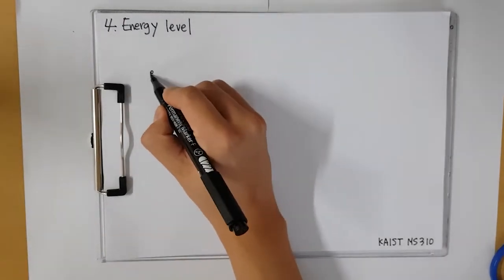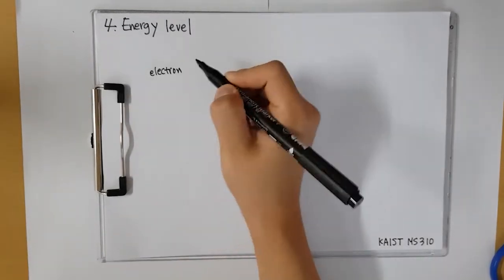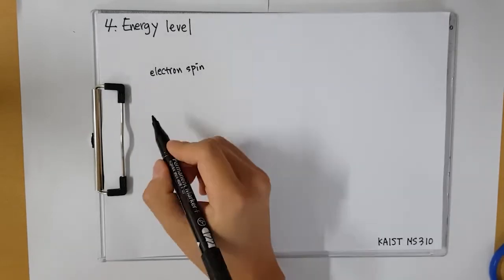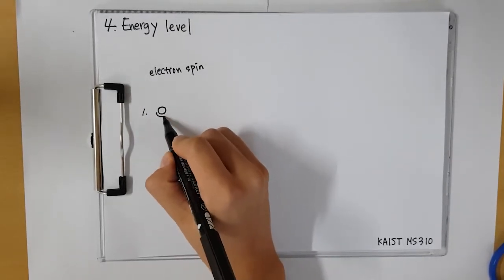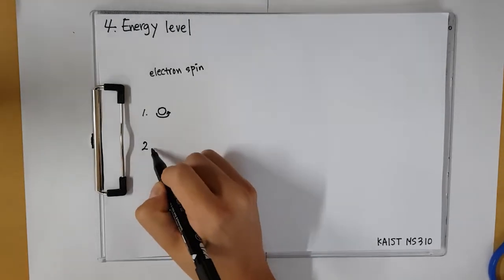Now, let's talk about energy level of NV Center. To understand this, we have to know electron spin. Spin is not just rotation of electron. It is all angular momentum that quantum has.